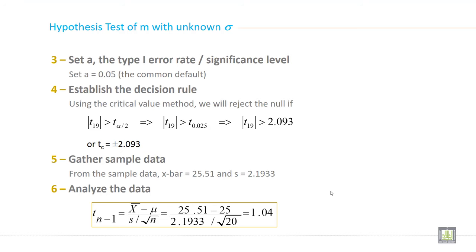So the third step of hypothesis test when sigma is unknown is set the type 1 error rate and significance level. Set α = 0.05, the common default. If not given or not mentioned, just take 0.05, which means 95% confidence level.